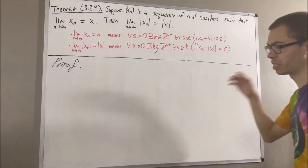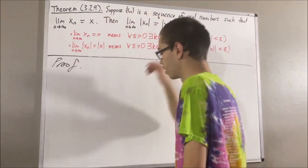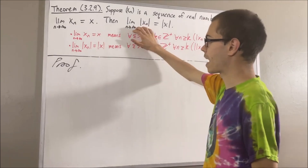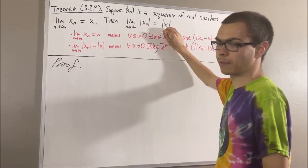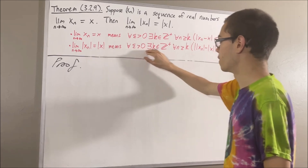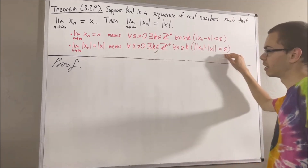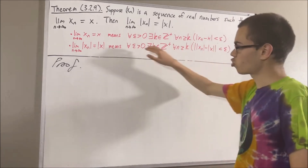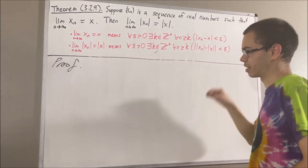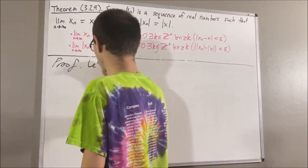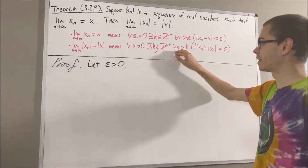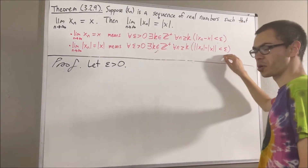Okay, so now let's get into proving this theorem. Our whole goal is to prove that the sequence of absolute values converges to the absolute value of x. So really, we want to prove this statement. And since we're trying to prove a statement about every epsilon greater than zero, give me an arbitrary epsilon greater than zero. And from here, we want to find a positive integer which makes this statement turn out true.